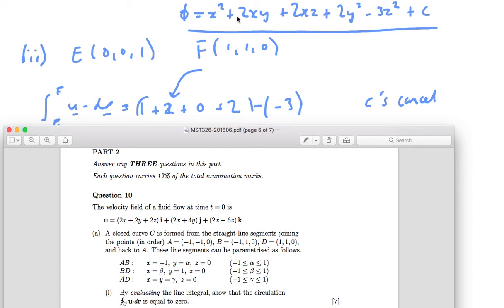Minus, when x is 0, that's nothing. 2x z, well x is nothing, so that's no good. 2y z, 2y squared, that's nothing because y is nothing. Minus 3z squared, so that's minus 3. So that's that minus 3 there. So it's that value minus minus 3, which will become plus 3.